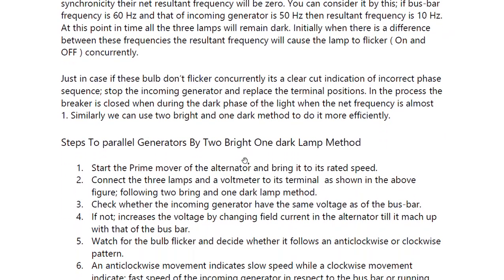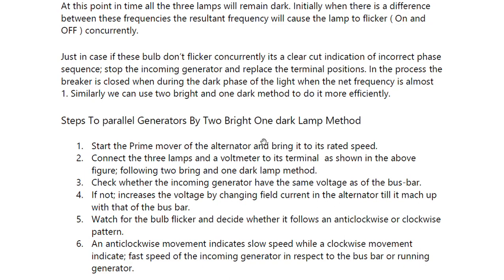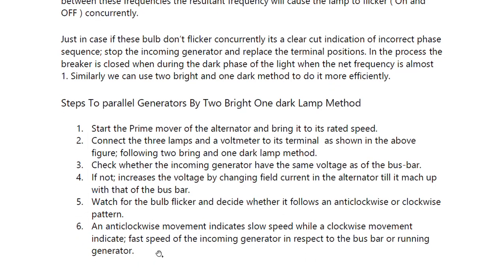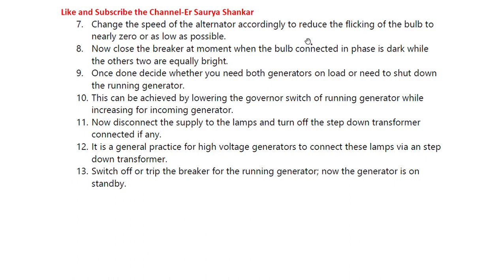Steps to parallel a generator using the two bright one dark lamp method: start the prime mover of the alternator and bring it to rated speed. Connect the three lamps and voltmeter to the terminals as per the two bright one dark lamp method. Check whether the incoming generator has the same voltage as the bus bar — if not, increase the voltage by changing the field current in the alternator until it matches. Watch for the bulb flickering and determine whether it follows an anti-clockwise or clockwise pattern. Anti-clockwise movement indicates slow speed while clockwise indicates fast speed of the incoming generator relative to the bus bar. Change the speed of the alternator accordingly to reduce the flickering to nearly zero.